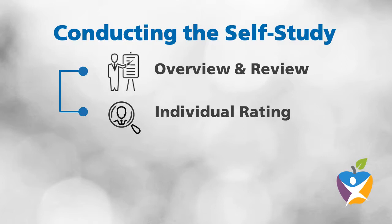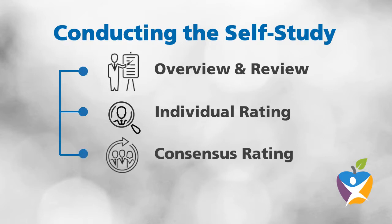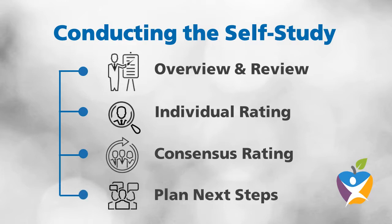We then move on to consensus rating. The facilitator guides the consensus rating process, then agreement on content implementation and planning of interventions is documented. Lastly, planning the next steps: here we identify two to three priorities for action planning and complete a detailed plan for the next steps based on urgency and feasibility.